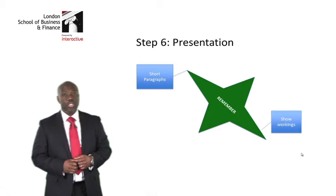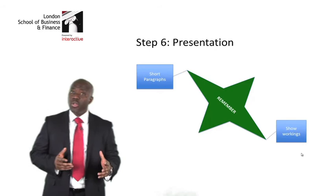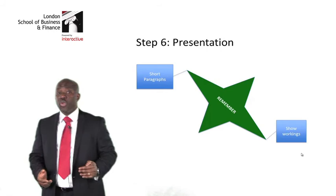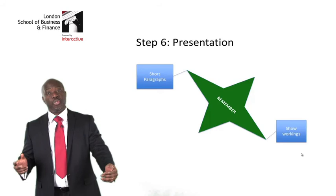The second step: make sure you show some workings. Most of your numerical questions will require a lot of numbers. You are not supposed to show every calculation, but try to show some workings. If you don't show workings and you get some numbers wrong, it will be difficult for the marker to identify where the numbers come from. Show workings for the important bits.